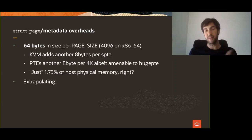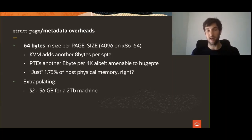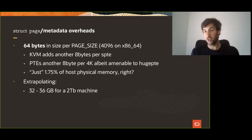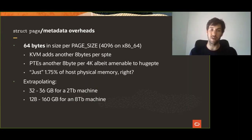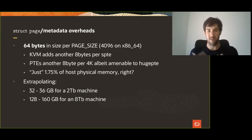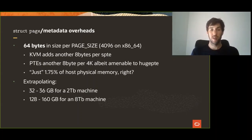But let's revisit what that actually means in practical terms. If we extrapolate that to 2 terabytes of memory, we are spending about 32 to 36 gigabytes — roughly 16 gigs per terabyte. And if you work with a slightly bigger machine like an 8 terabyte machine, you spend about 128 to 160 gigabytes of memory. These are not really crazy numbers — these are actual numbers on machines we have problems with, where a lot of this memory could hopefully be used to actually boot more guests.